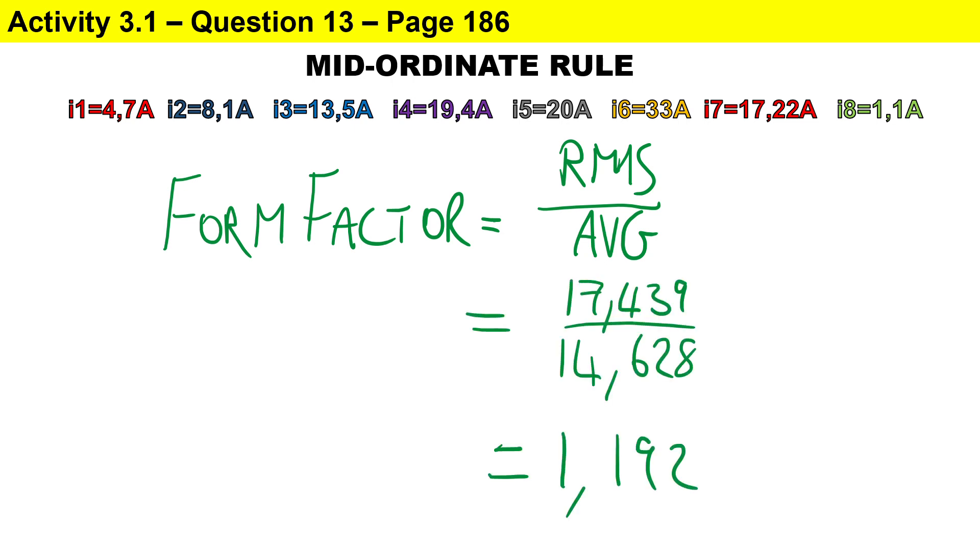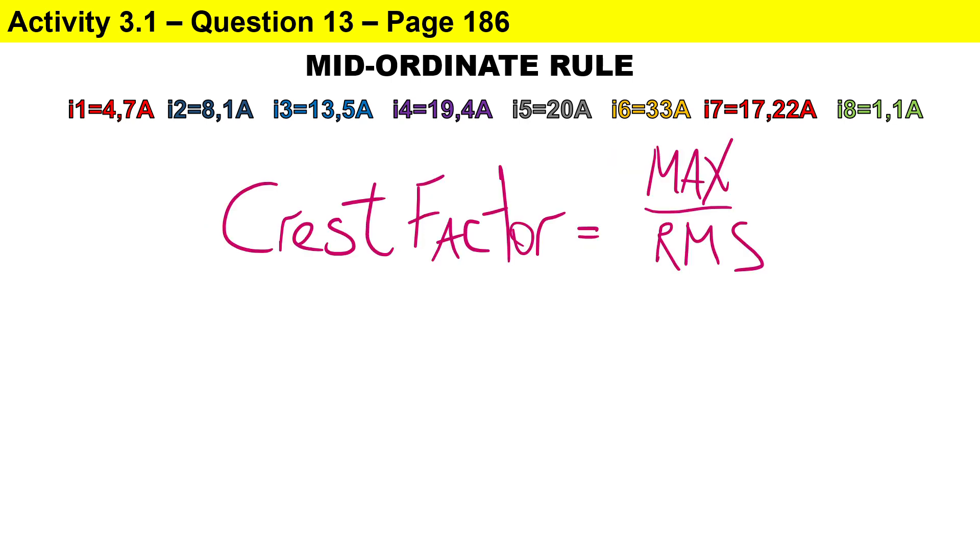To calculate the crest factor, it is the ratio of the maximum value to the RMS value. The highest value in our mid-ordinates is 20 amperes, so we divide by the RMS which is 17.439, and we end up with a crest factor of 1.147.